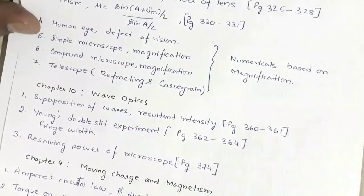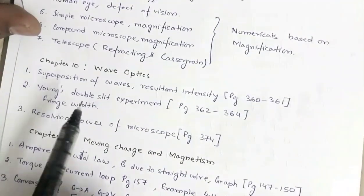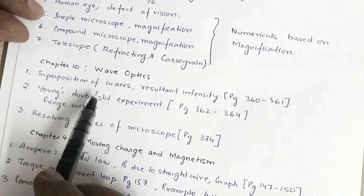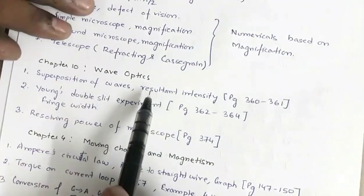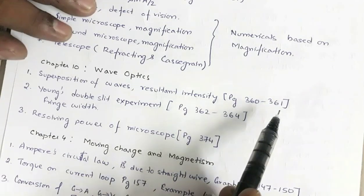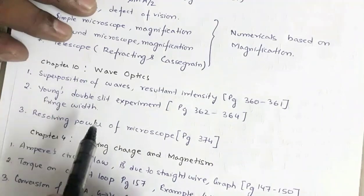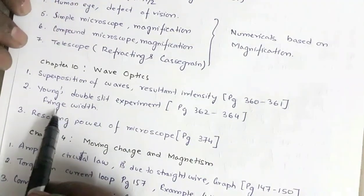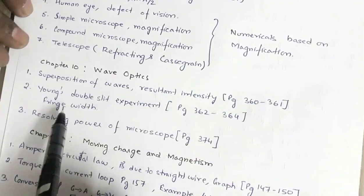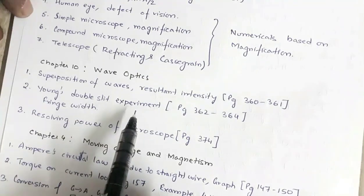Next is Chapter 10, Wave Optics. You may be asked about superposition of waves, the mathematical deduction, and the resultant expression for resultant intensity, given on page numbers 360 and 361. Then Young's double slit experiment — a highly important topic — and the calculation of fringe width, given on page numbers 362 to 364. The probability of a numerical from Young's double slit experiment is also very high.